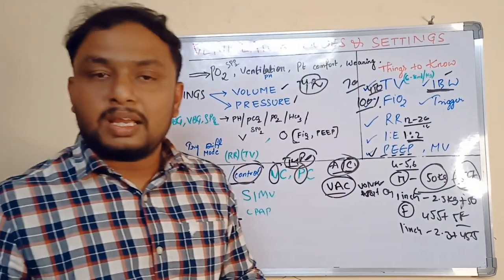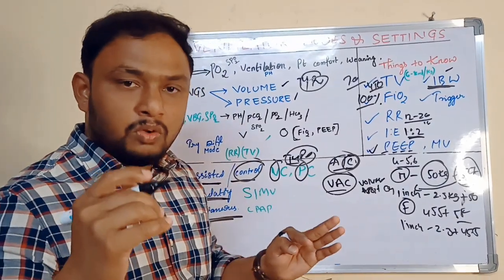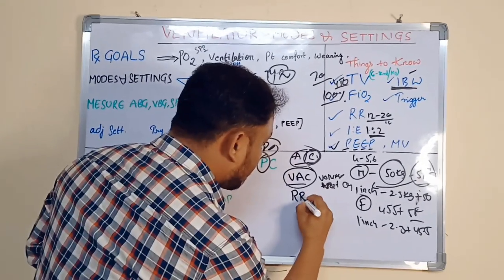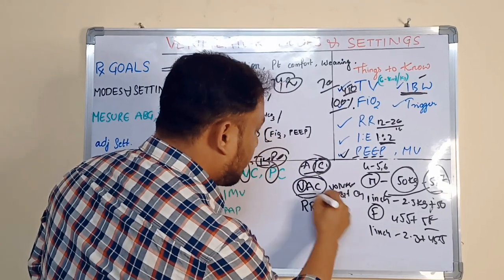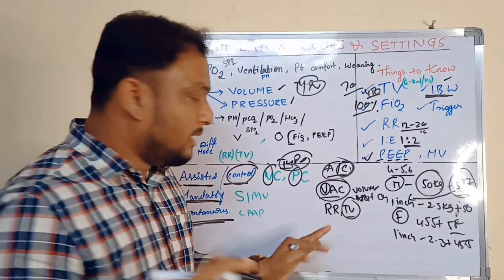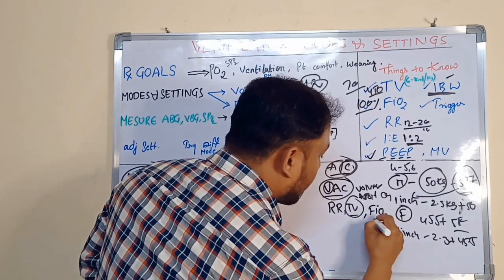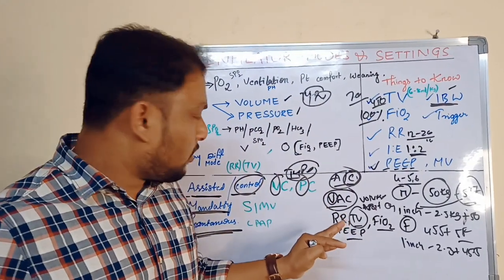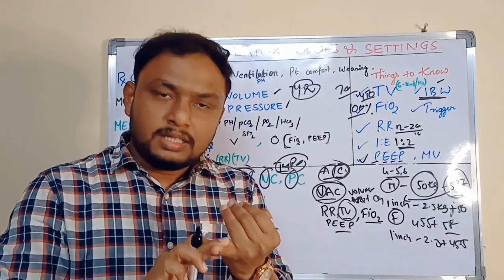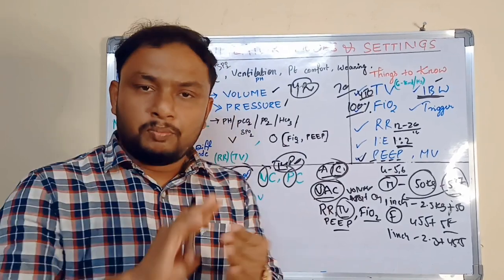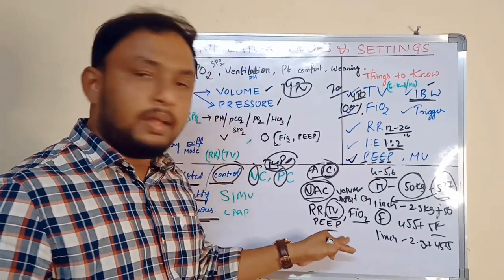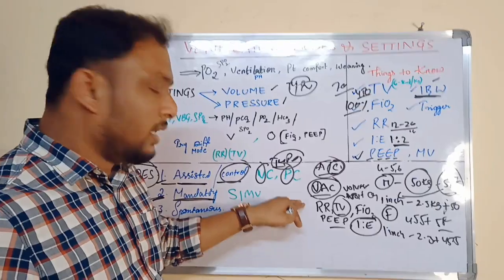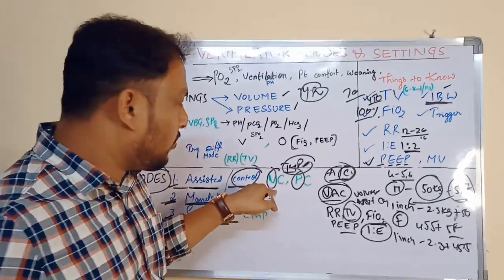In the VAC mode, what you need to set mainly — you need to focus on the volume. The name itself suggests tidal volume. For that, you need to set the respiratory rate, tidal volume, FiO2, and PEEP. So there is no pressure here. We are mainly focusing on the rate, tidal volume, FiO2, PEEP. So these are the important parameters, as well as IE ratio. These parameters you need to focus on in volume control mode — VAC mode.